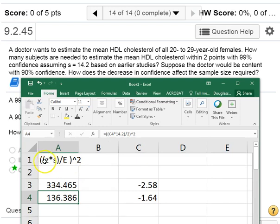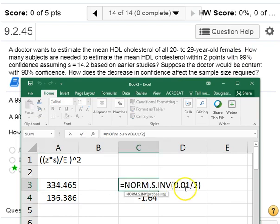I couldn't write the Z alpha divided by 2, but here's what we want to use. So we need to find the critical Z value associated with our given level of confidence. For 99% confidence, that means alpha is 1%, or 0.01. We want to divide that by 2.